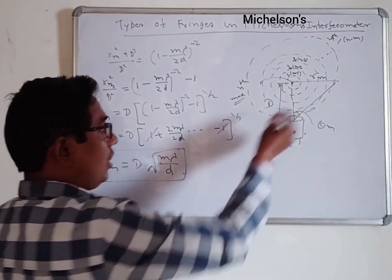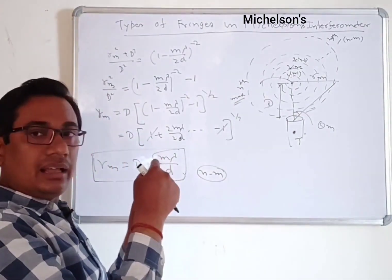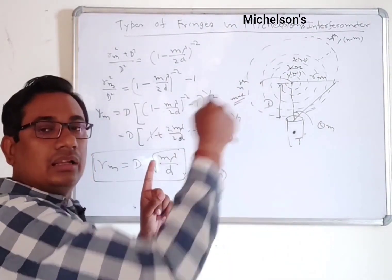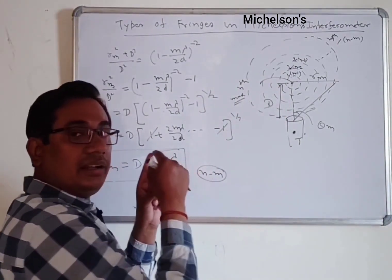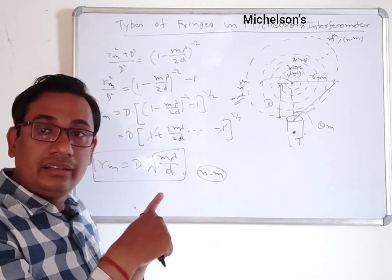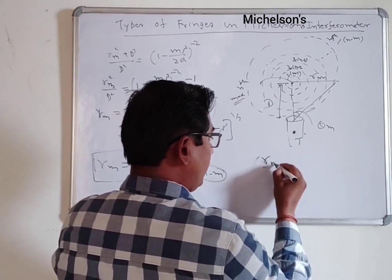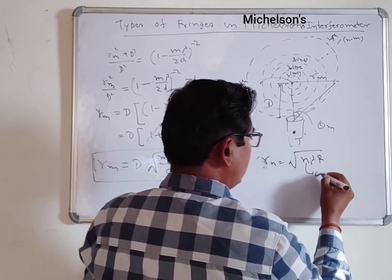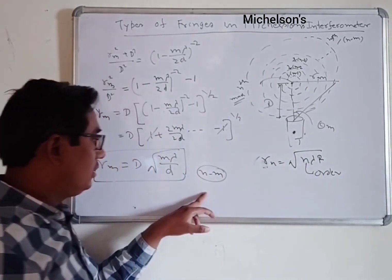For the mth ring, the order is n−m, meaning order decreases as you move outward. The radius increases as order decreases. This is opposite to Newton's rings, where the radius for the dark ring is √(nλR) — here order increases with radius. In the Michelson interferometer, order decreases as radius increases.